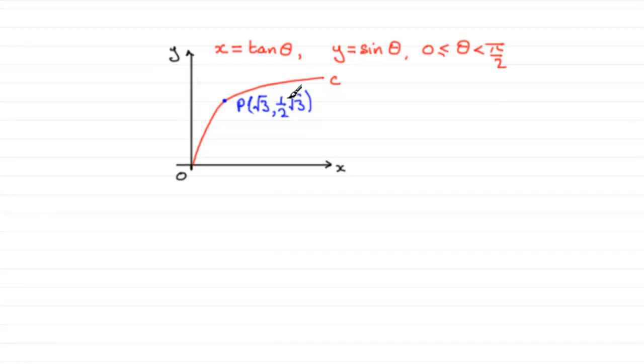The question is to find the value of θ at this point P. We can do it in two ways: when x = √3, work out θ from this equation, or when y = (1/2)√3, substitute it into the other equation and work out θ. Either way you should get exactly the same answer. I'll do it by taking x to be √3.